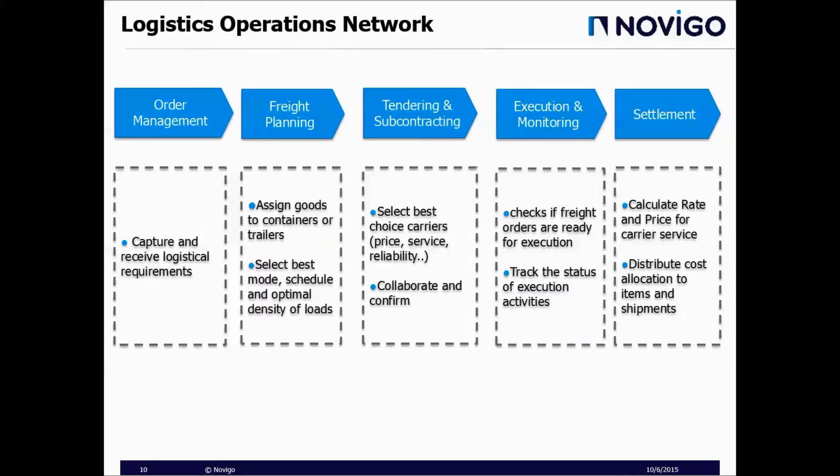The logistics operations network can be divided into five major steps. The first step is order management, where the company captures and receives logistical requirements. The next step is freight planning, where the company assigns goods to containers or trailers, selects the best mode, schedule, and optimal density of loads.